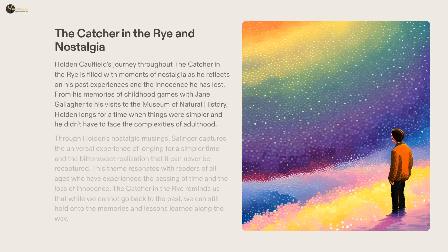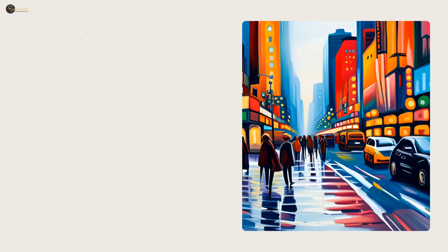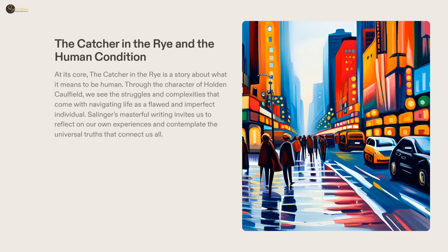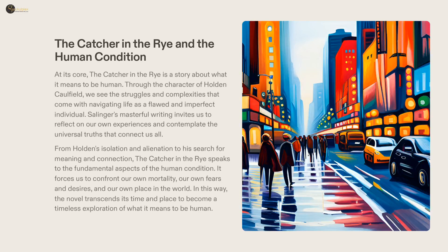Throughout The Catcher in the Rye, Holden Caulfield's journey is marked by reflections of his past and a longing for the innocence he has lost. Though he cannot go back to his past, he finds comfort in the memories and lessons he has gained. As The Catcher in the Rye progresses, Holden Caulfield's journey encourages readers to contemplate universal truths and complexities of humanity. Salinger's writing provides an opportunity to reflect on our fears and desires, as well as a poignant reminder of the impermanence of life.